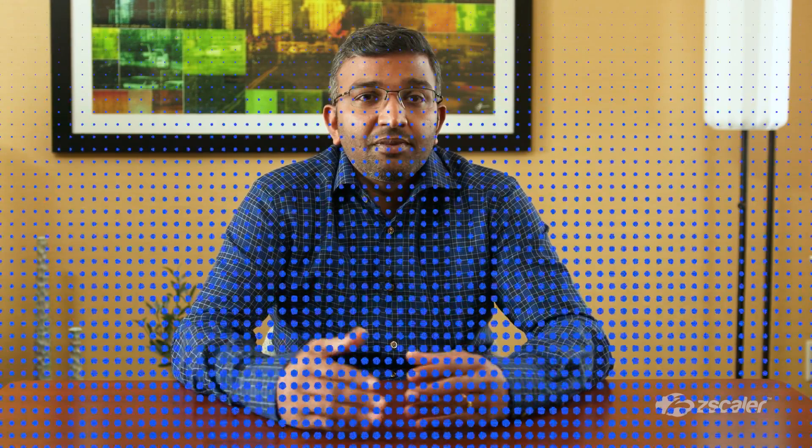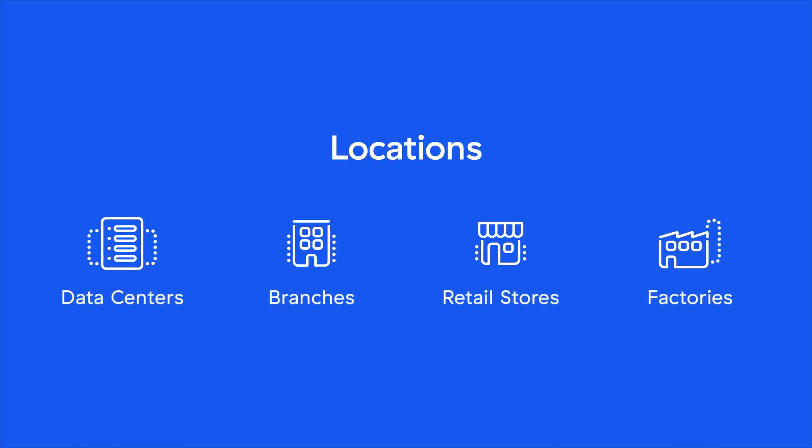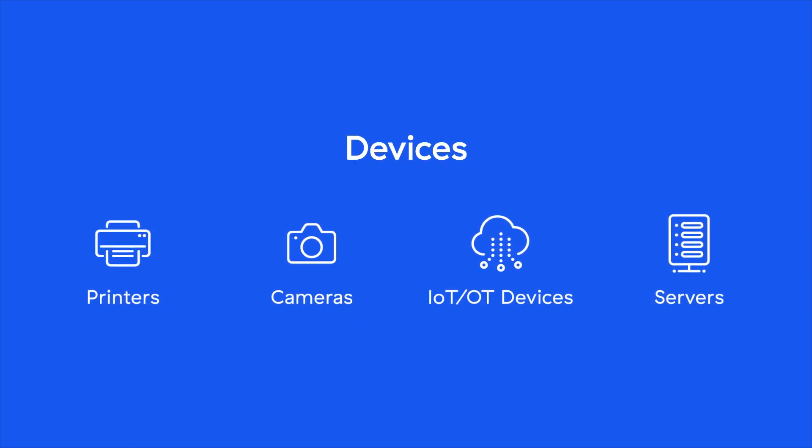It can also enforce data protection policies and prevent deliberate or accidental data leakage. The plug-and-play physical or virtual appliances can be used in both data centers and branch or retail environments that have non-user devices such as printers, phones, cameras, and servers. With simple zero-touch provisioning, these appliances can extend Zero Trust security to all users and devices without having to install an agent on these devices. This greatly reduces the time required to set up new branch offices or to integrate in a merger and acquisition scenario.